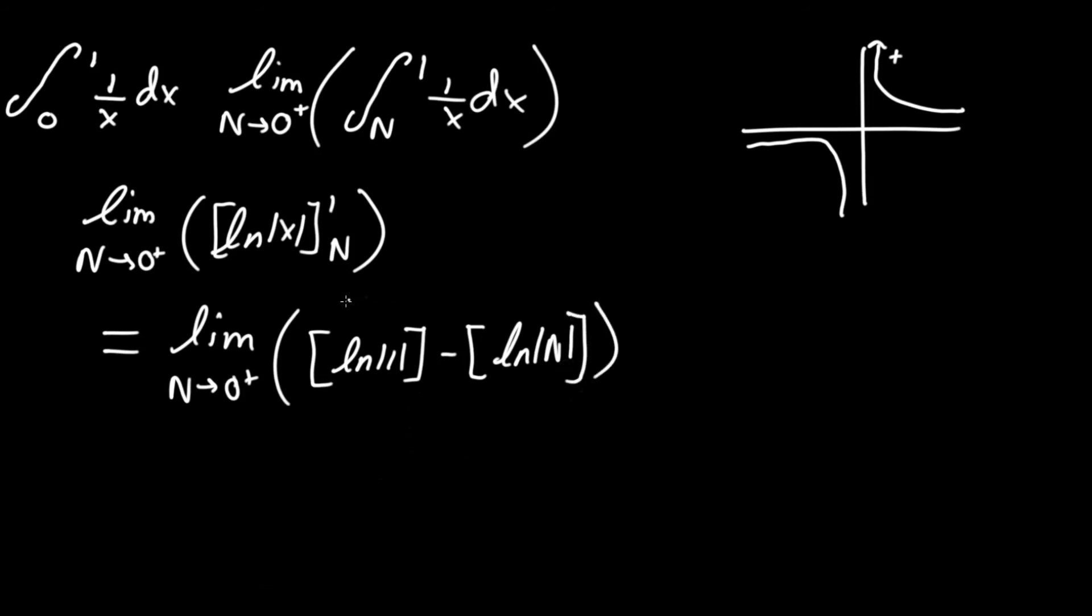Now let's do the first part. ln of 1, as we know, is 0, and here's where things get a little tricky. So limit as n approaches 0 from the plus side, it will be of negative ln absolute value of n.